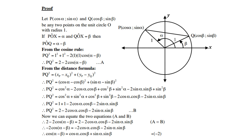From the cosine rule in trigonometry, we know that within that triangle, PQ² equals 1² plus 1² minus 2 times 1 times 1 times cos(alpha minus beta). Therefore, collecting like terms, PQ² equals 2 minus 2cos(alpha minus beta). Call this equation A.